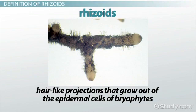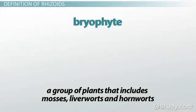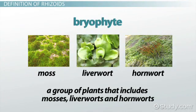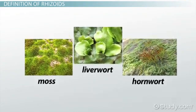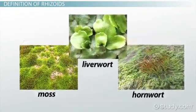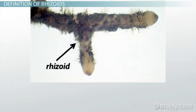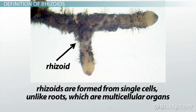Rhizoids are simple, hair-like projections that grow out of the epidermal cells of bryophytes. The term bryophytes refers to a group of plants that includes mosses, liverworts, and hornworts. All of these are non-vascular plants, or plants that don't have complex tissues for transporting water and nutrients. Rhizoids are similar in structure to the root hairs found on more complex vascular plants. Rhizoids are formed from single cells, unlike roots, which are multicellular organs.